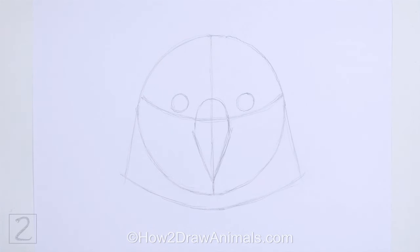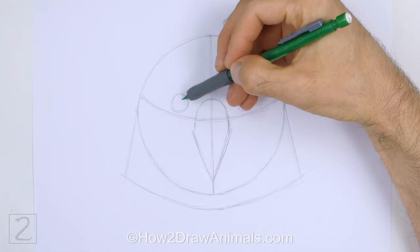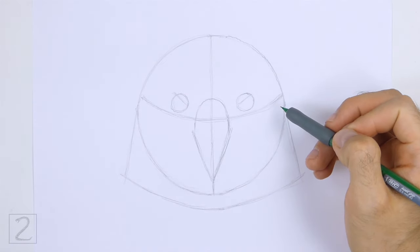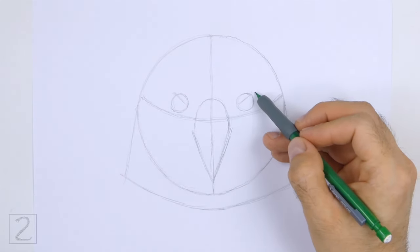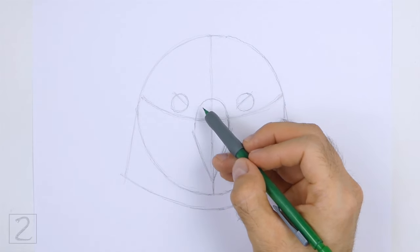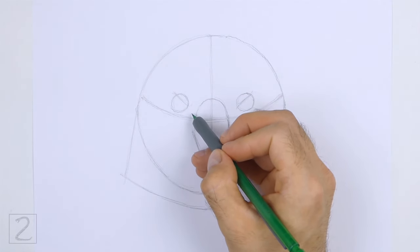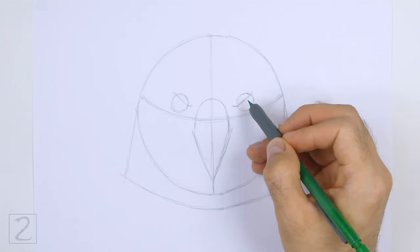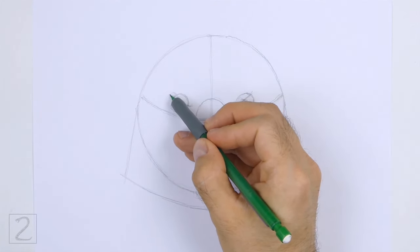And that's it for the guidelines. Now let's start on the final drawing. Use the small circles inside the head as guides to draw the eyes. Lightly sketch sloping lines across the circles for the tops of the eyes. The bottoms of the lines should point down towards the beak. When you get the shapes right, darken the lines.